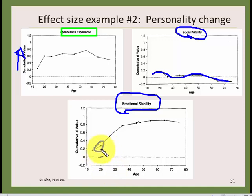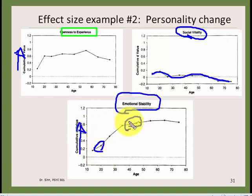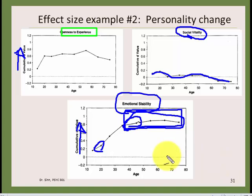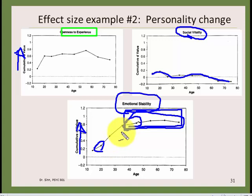Emotional stability is interesting: in your 20s, everything feels like a crisis. As you get older — by around 40 — you become much more emotionally stable. From an evolutionary perspective, people who were more emotionally stable may have been better parents and more reliable partners, making them more likely to have offspring. When you're younger, a bit more emotional volatility may have been adaptive for dating and social competition.